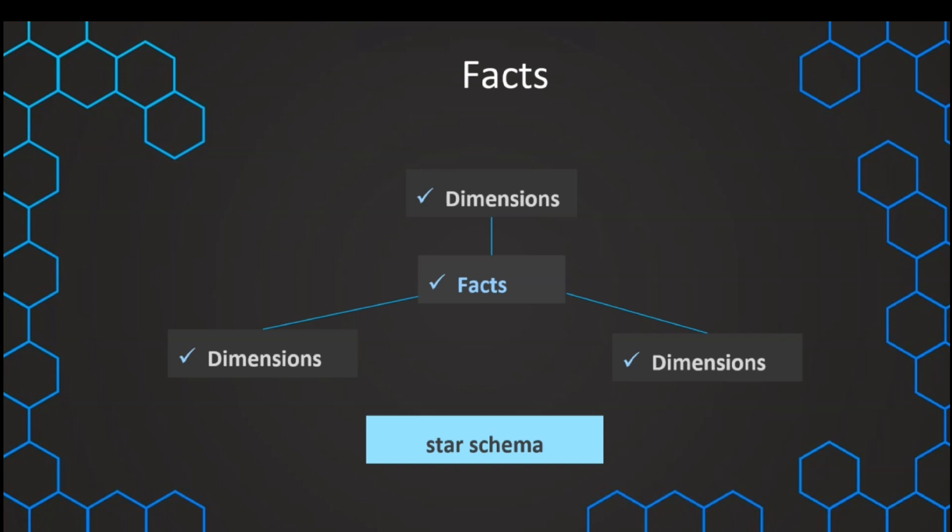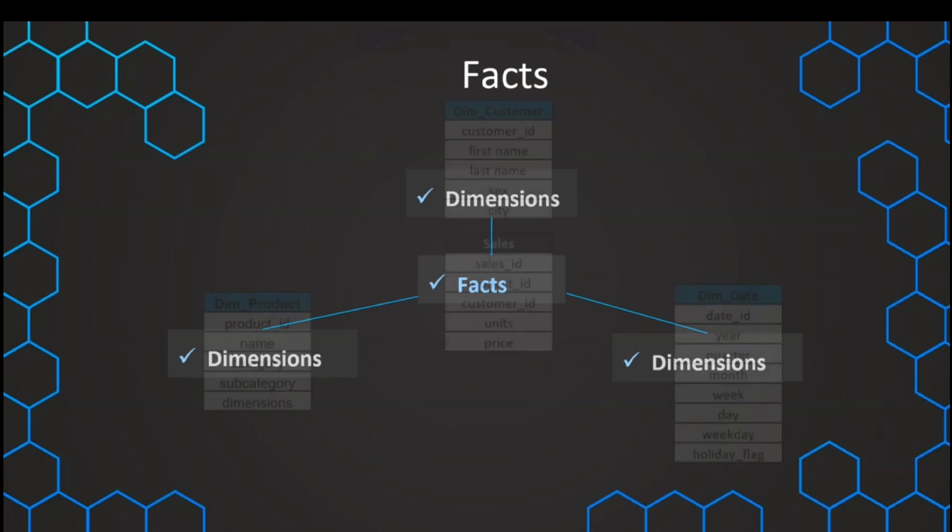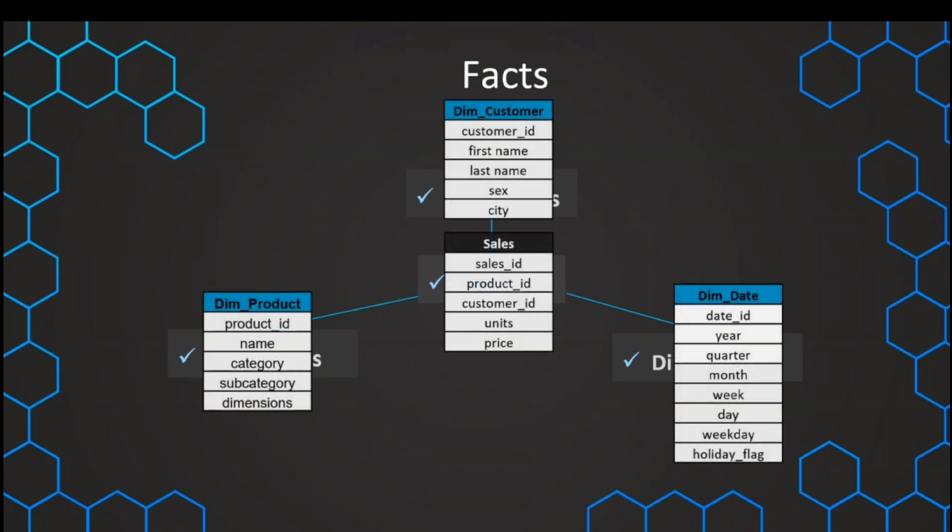We remember that in a star schema, which is the most common schema in our data warehouse when we model our data in a dimensional way, we have the fact table in the middle, and then we have the dimensions clustered around this fact. An example of that could be that we have a fact table, which could be in our case a sales table, and then we have different dimension tables clustered around this fact.